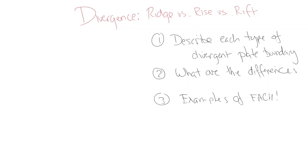Welcome back to the Earth Science Classroom, the channel that gives you everything to do with Earth Science and more. We're in plate tectonics, looking at divergent plate boundaries and divergence, where the plates split apart. This video is looking at the ridge, the rise, and the rift — in particular the rift valley — the differences, characteristics, features both on land and in the ocean, and examples of how they work in the big system.